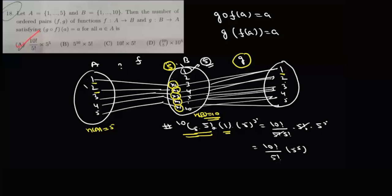What we are now left with is five remaining elements in B, and for these five remaining elements we need to find an image in this set A. Now for each element we have five choices. For the first element we have five choices, for the second one we have five choices, so it'll be 5 times 5 times 5, five times, so that will be 5 to the power 5. So the total number of ways of doing it is 10C5 times 5! times 5^5, and if you're going to solve it, it will be 10! upon 5! times 5^5, and that's your option A.